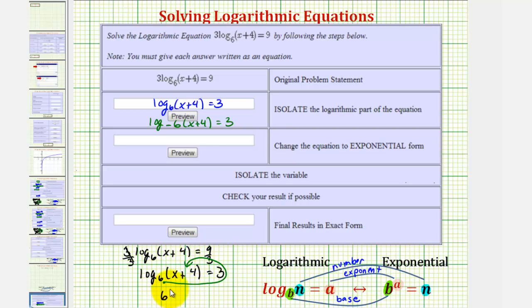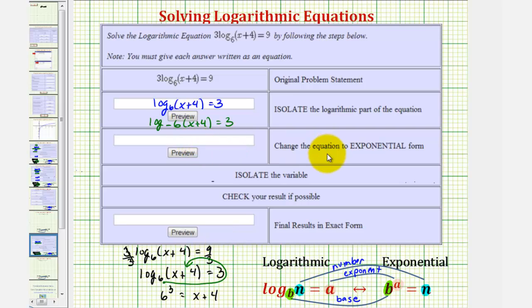So once again, six to the third must equal the quantity x plus four. Now we want to enter this when it says change the equation to exponential form. Let's go ahead and change the order here and put the x plus four on the left. So we'd have the quantity x plus four equals six to the third.